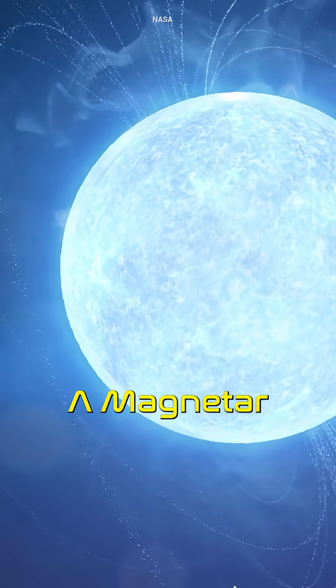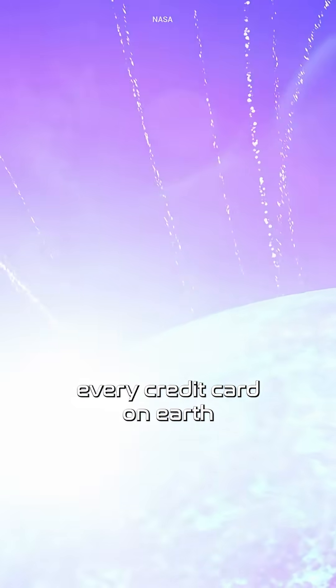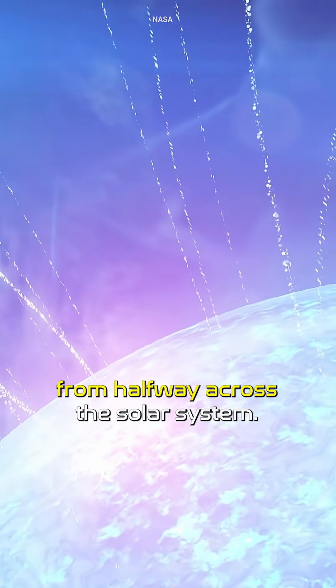A magnetar, a neutron star with a magnetic field so strong, it could erase every credit card on Earth from halfway across the solar system.